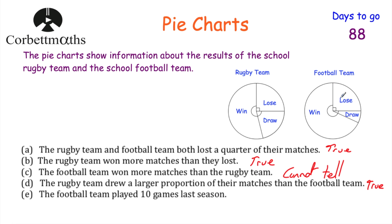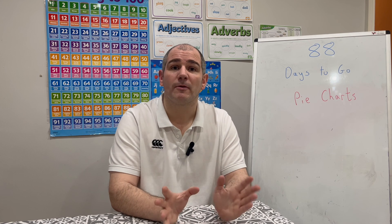Statement five: the football team played 10 matches last season. If they played 10 matches and lost a quarter of them, a quarter of 10 is 2.5 — which is impossible since you can't lose half a match. So the football team cannot have played 10 matches — that's false.